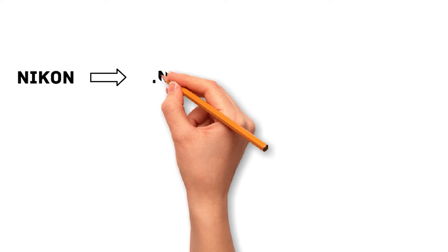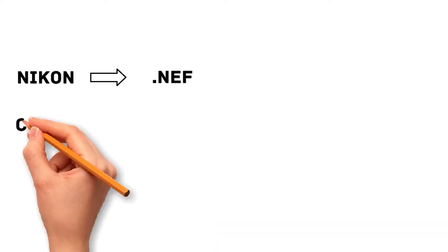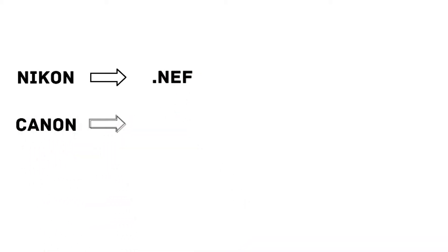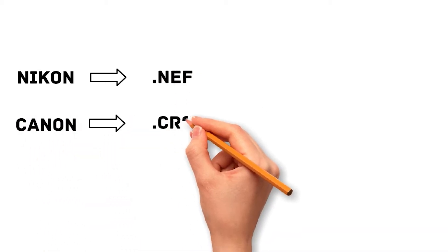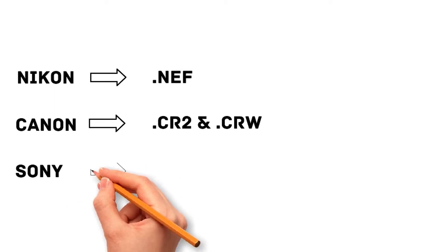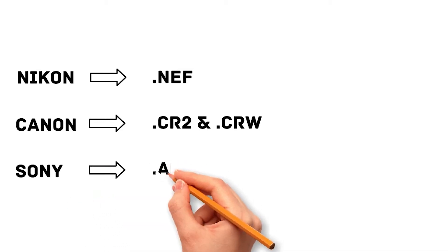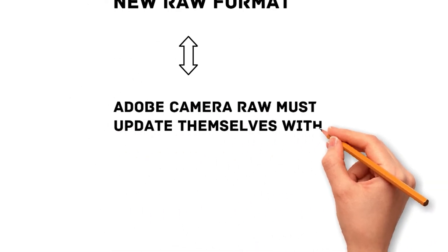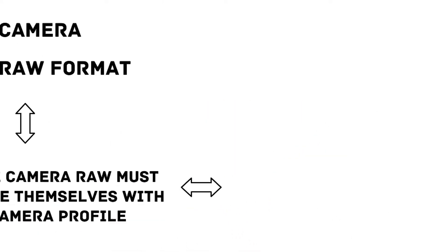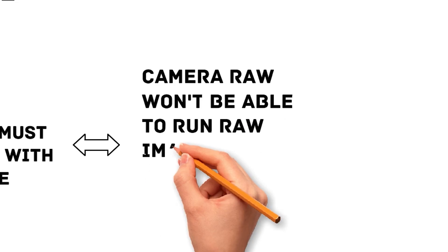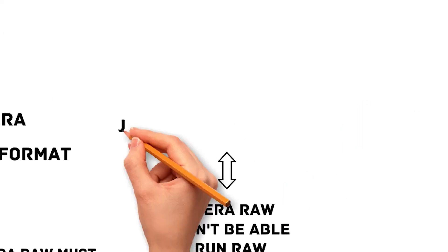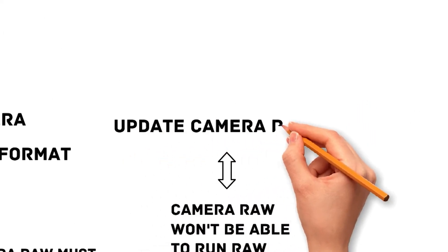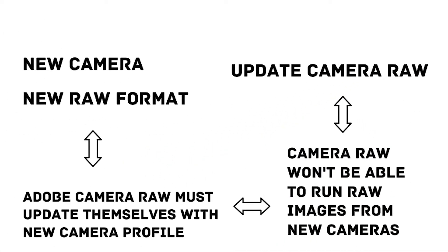Different cameras have different types of raw file formats, which can be confusing for some people. And with every new camera release, the manufacturers update the raw file format too. If Adobe doesn't update the newly released camera profile, then Photoshop won't be able to open the raw images. So it's very important to keep your Camera Raw updated.